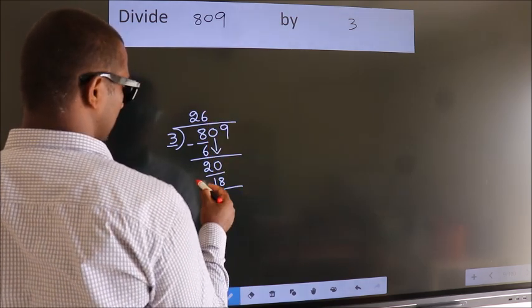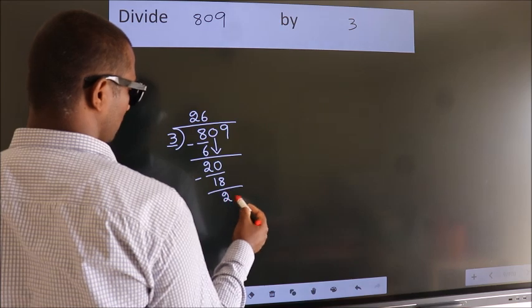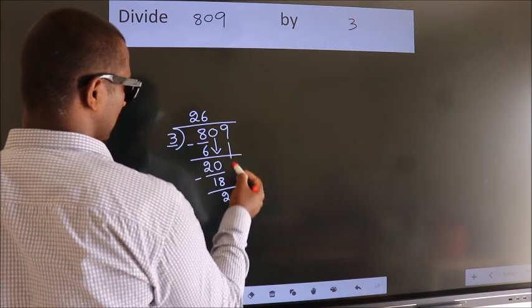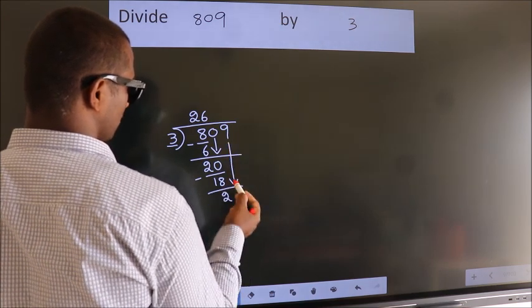Now we subtract and get 2. After this, bring down the beside number. So, 9 down.